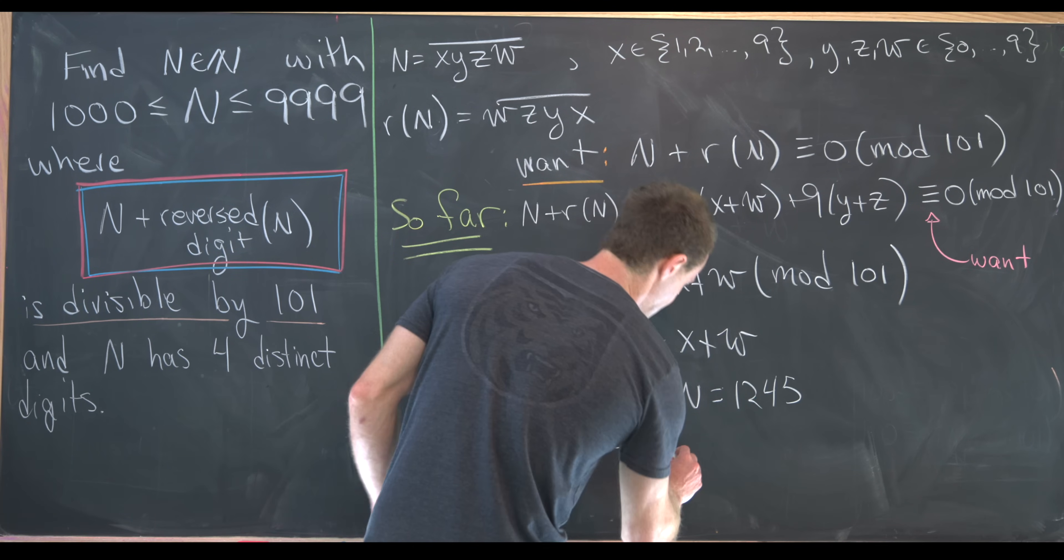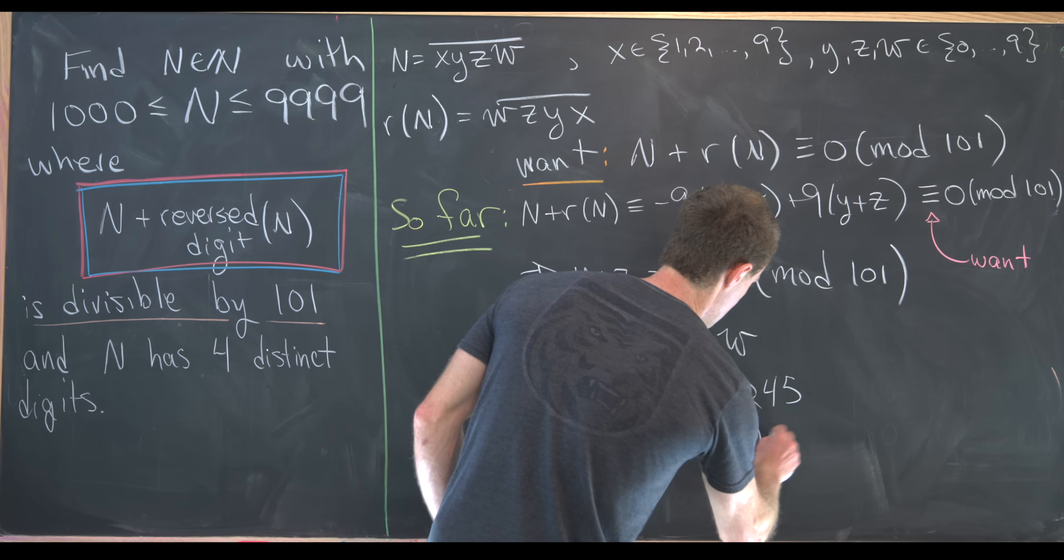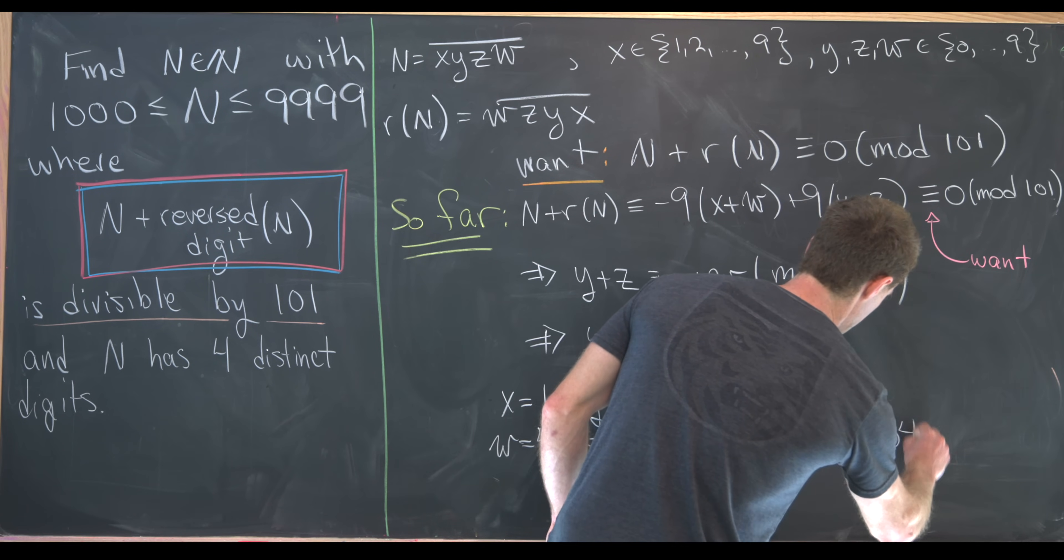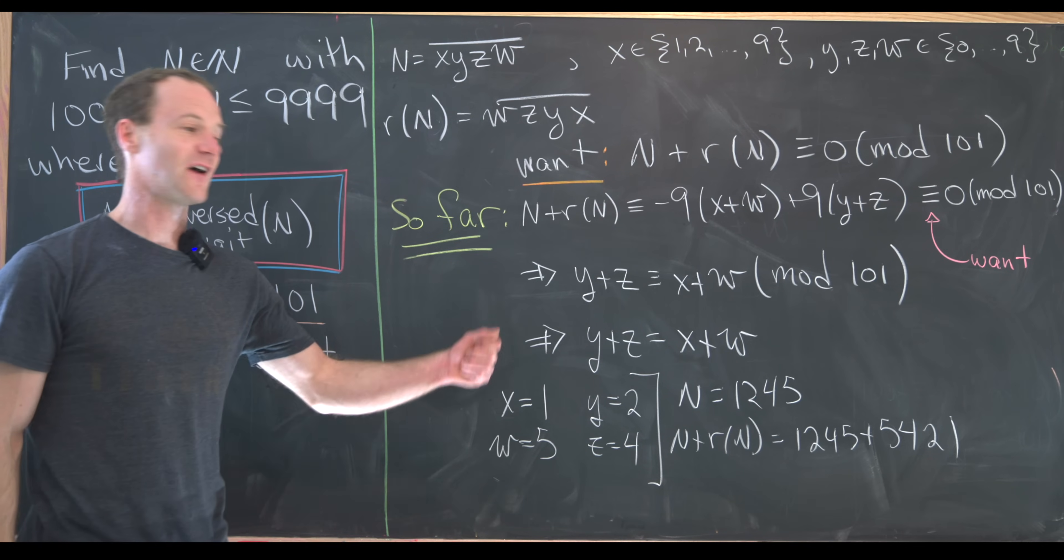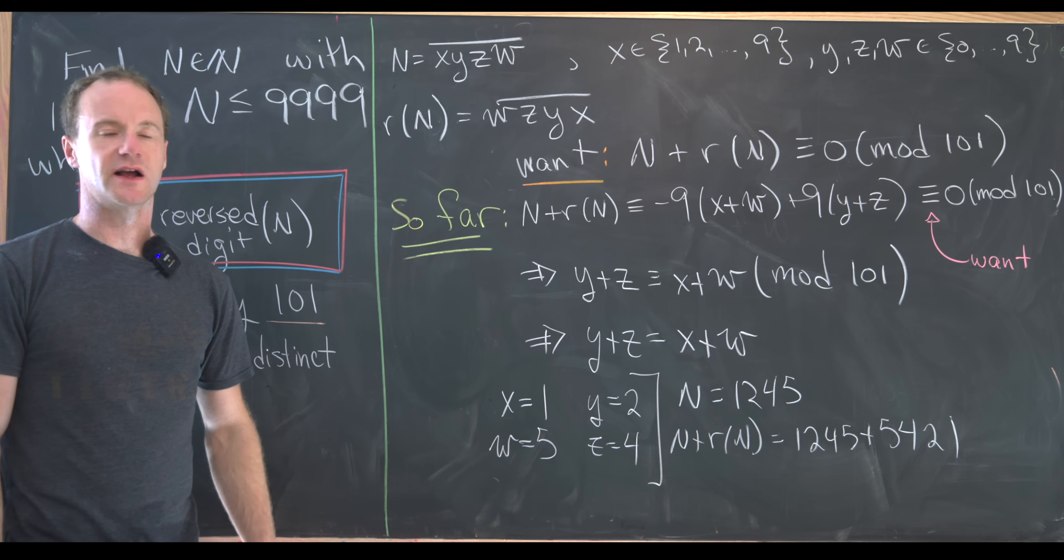So if we were to check that everything's okay, we would need to calculate N plus R of N, which in this case is 1245 plus 5421, and find that that was a multiple of 101. But I'll let you guys do that and tell me if I got it right in the comments.